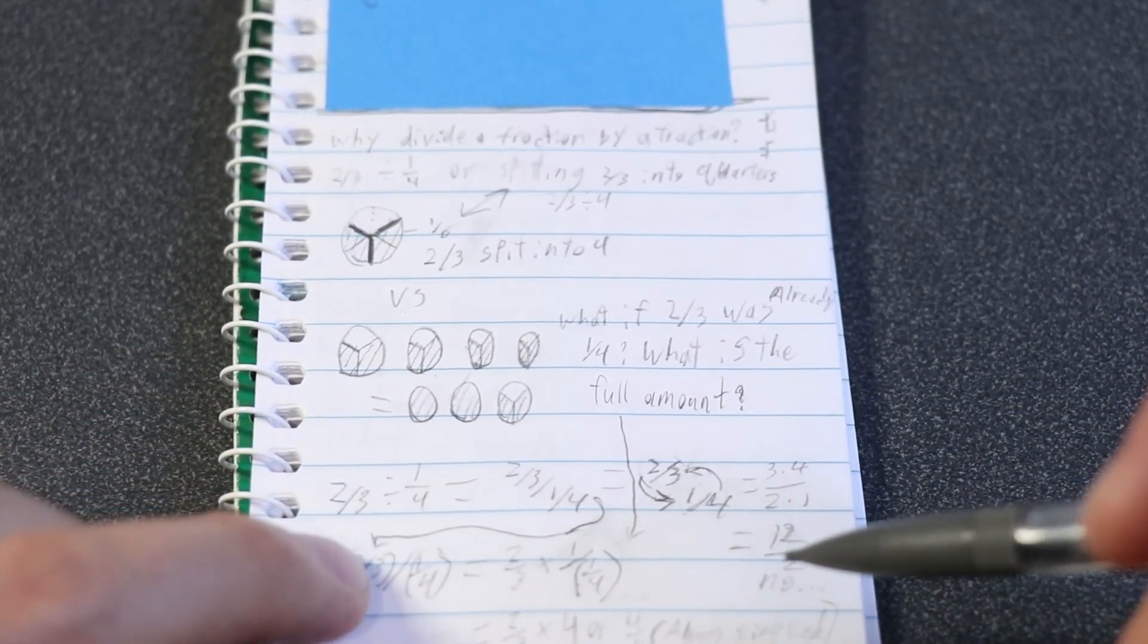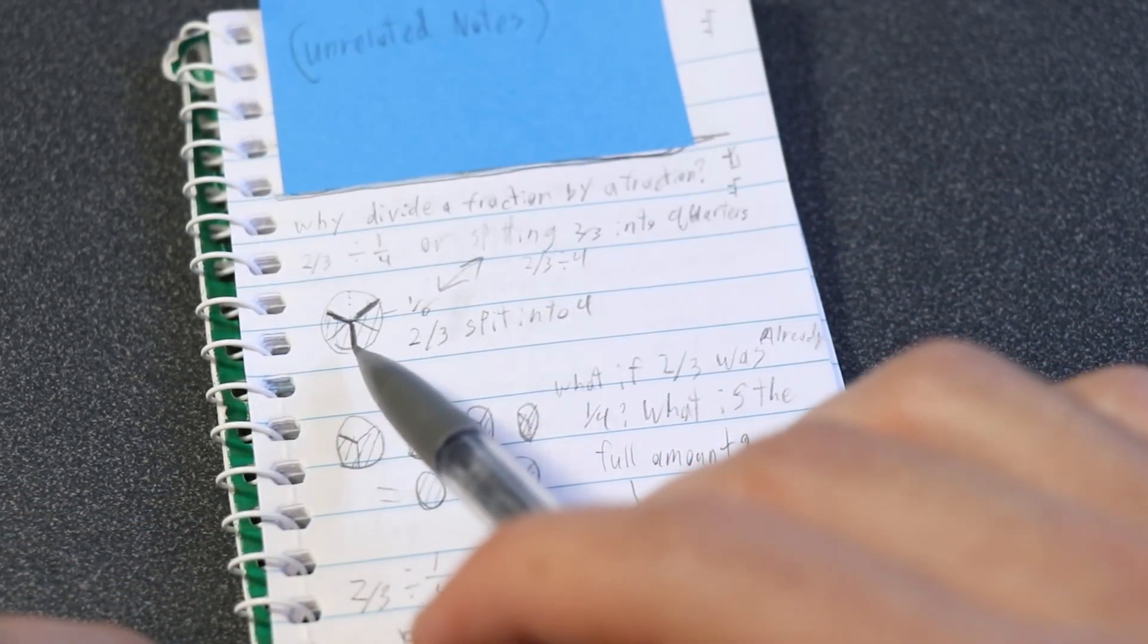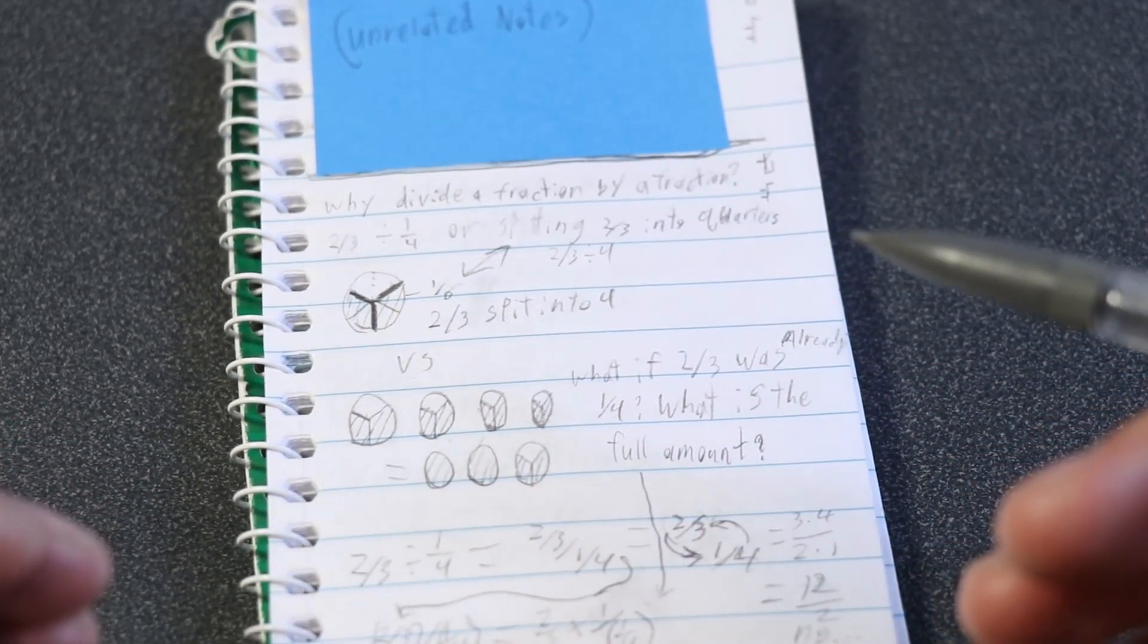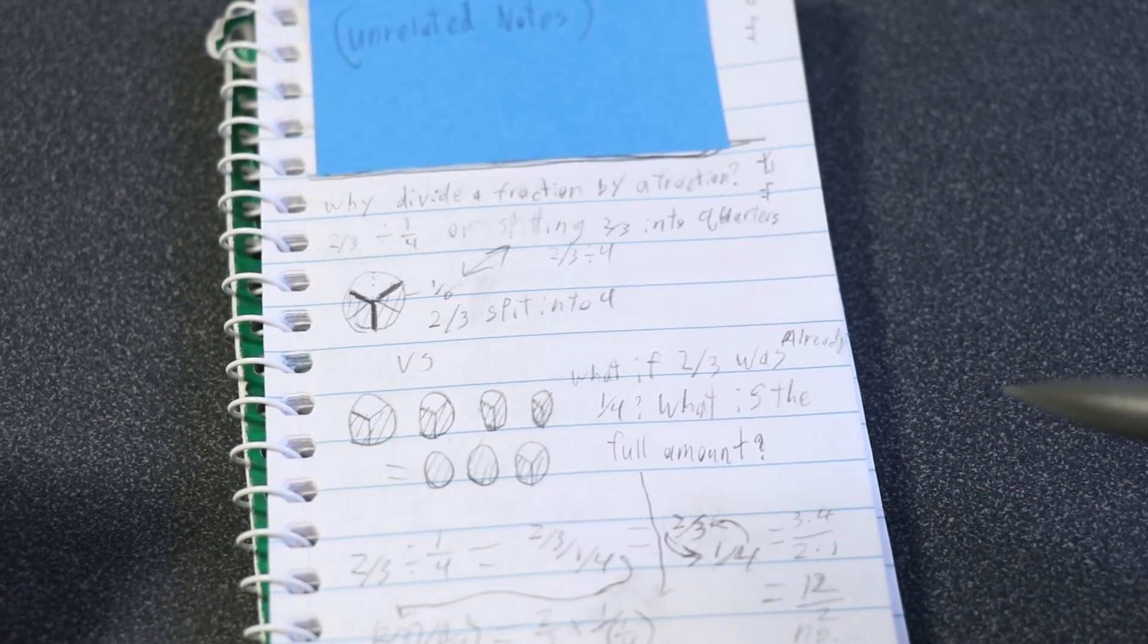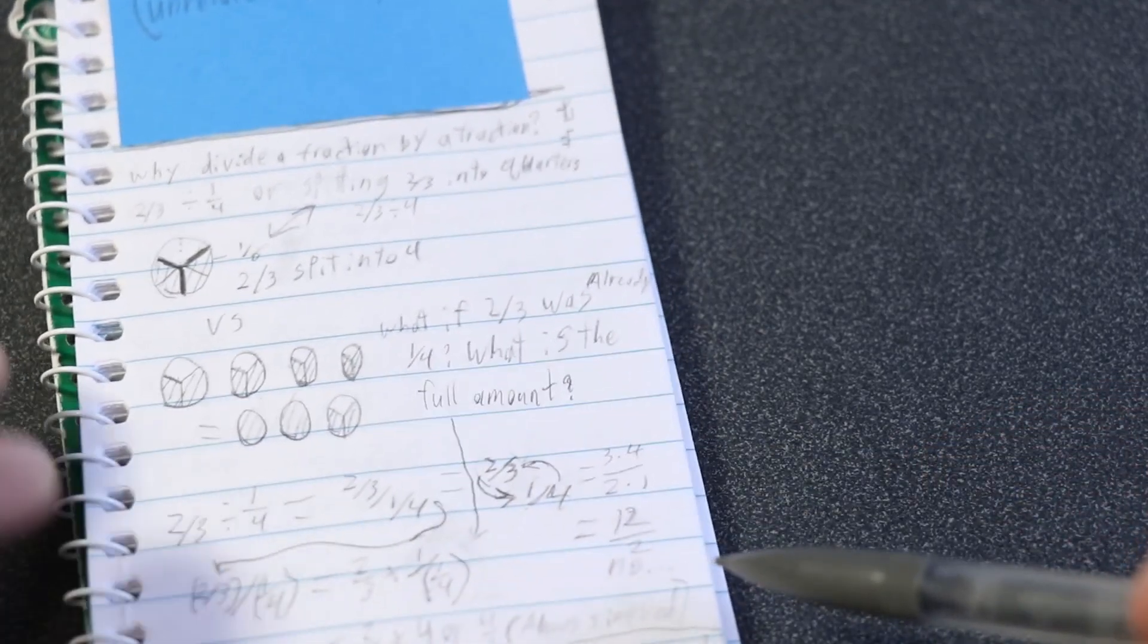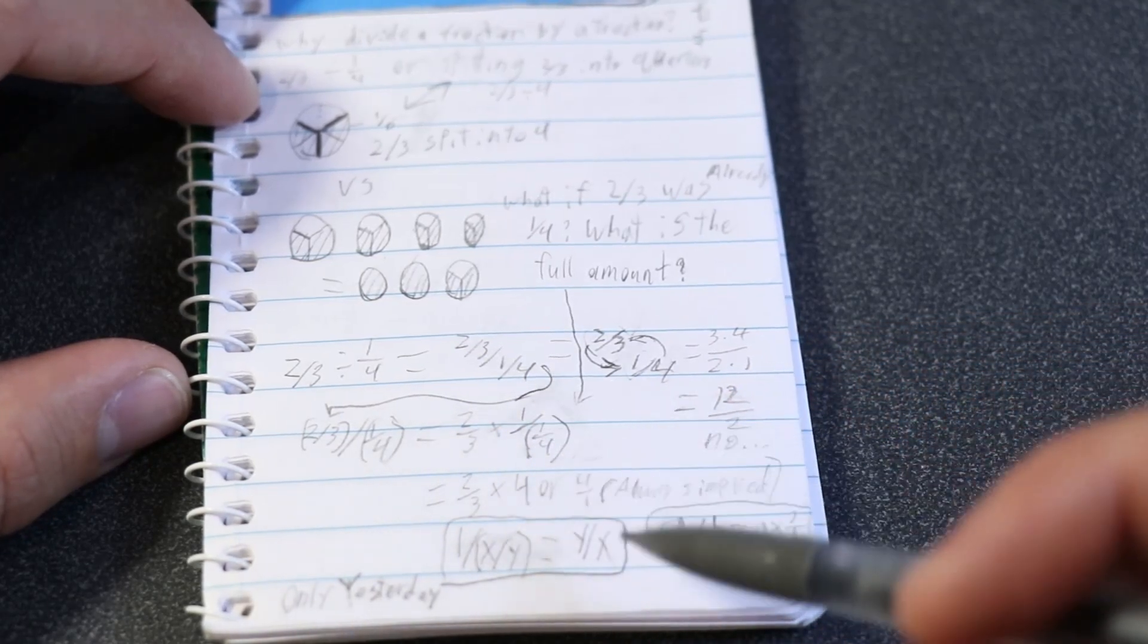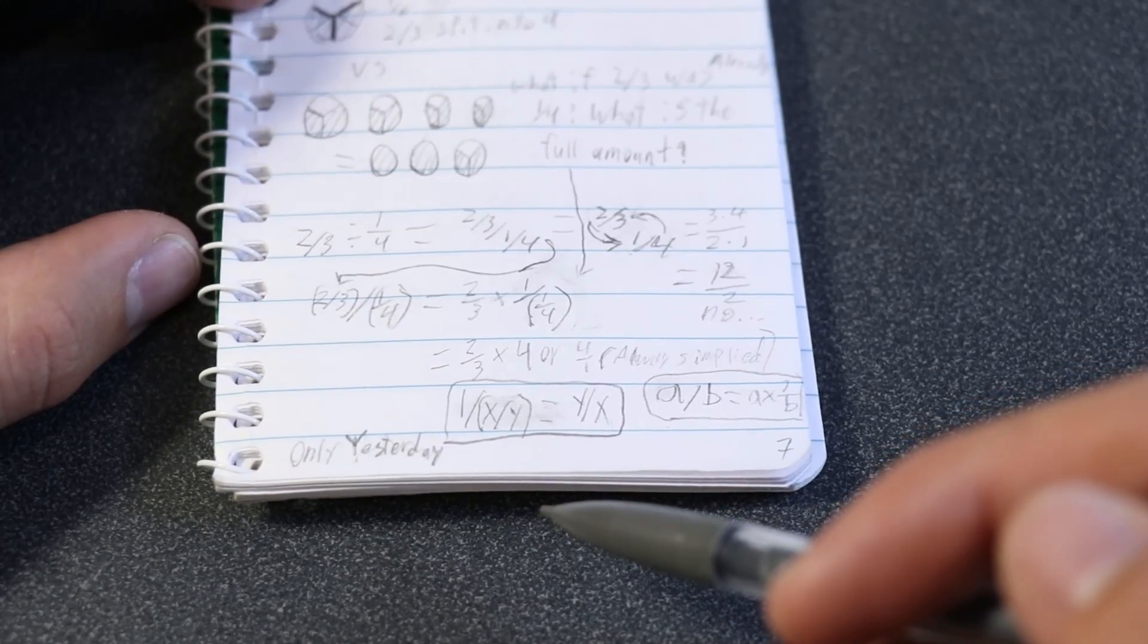I just thought about it for a while, and I came up with, if that's asking what happens if you take two-thirds and split into quarters, then what would divide by one-quarter be asking? And I figured it would be asking, what if two-thirds was already one-quarter, then what's the whole amount? So yeah, that's what I wrote here. And then I was trying to figure some stuff out. But it's dividing fractions by fractions. And I'm not sure if it's totally clear what's going on.